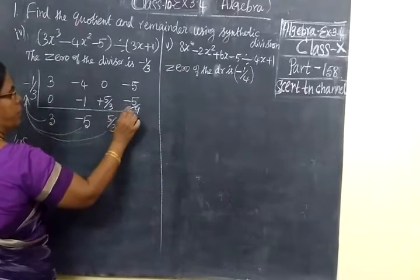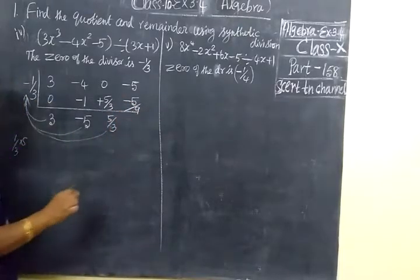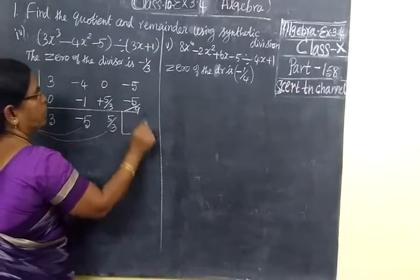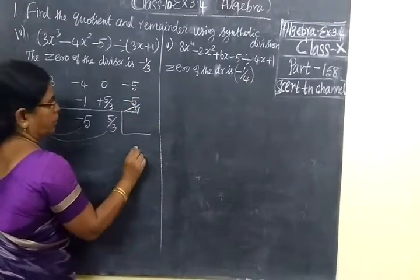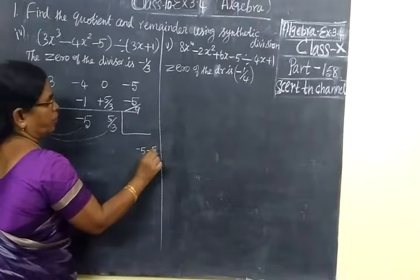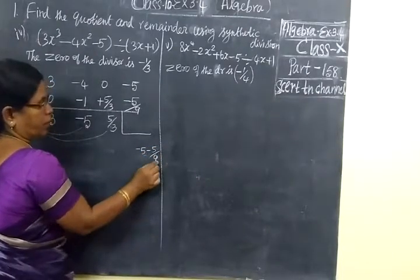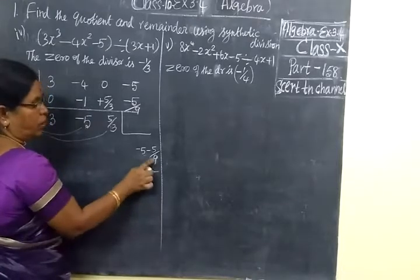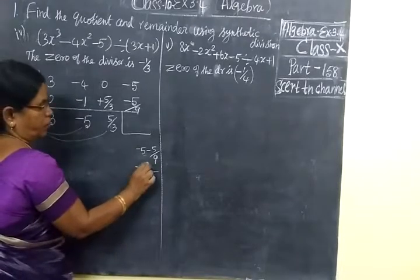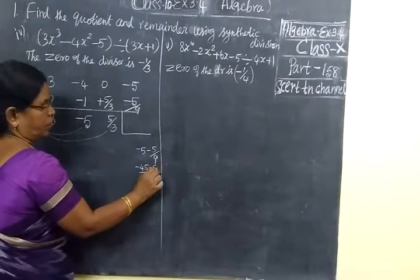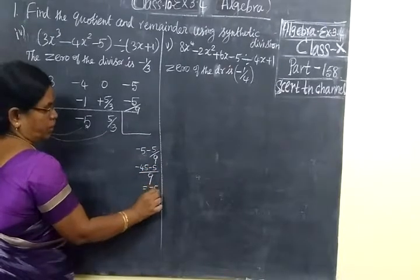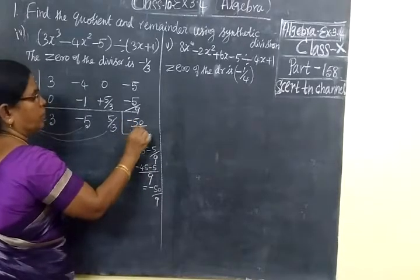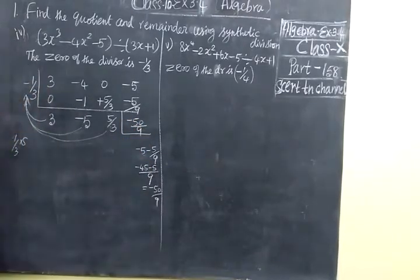One minus means minus. Two minus means plus. One minus means minus. Now for this you do the simplification: minus 5 minus 5 by 9. LCM is 9. First you write the LCM, then cross multiply: minus 45, then minus 5, so minus 50 by 9. So here you are writing minus 50 by 9.